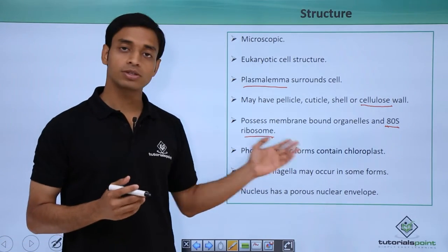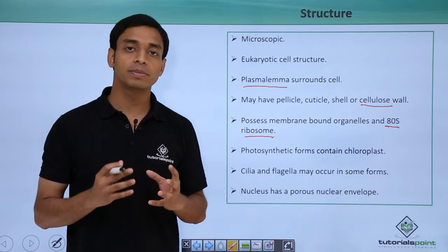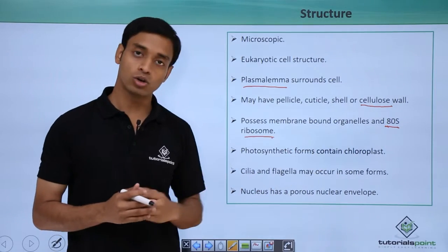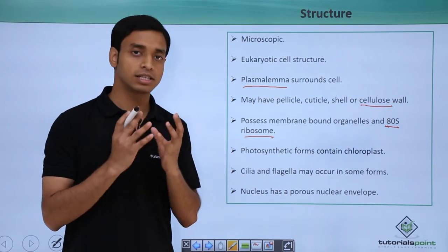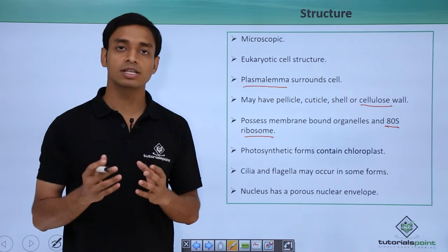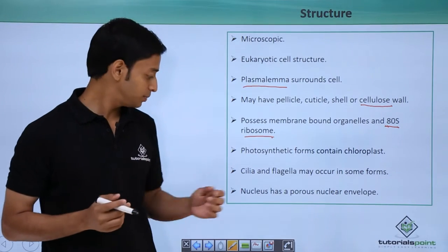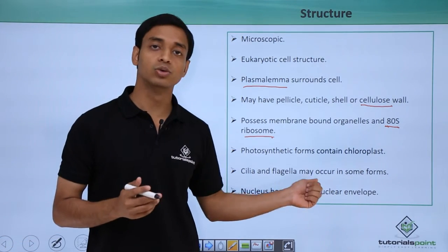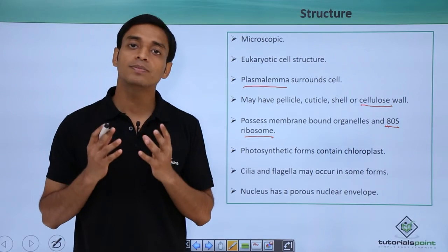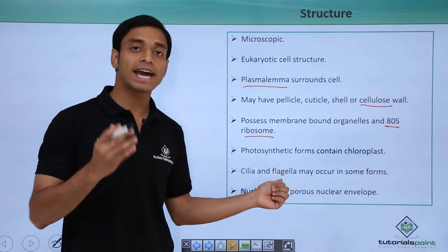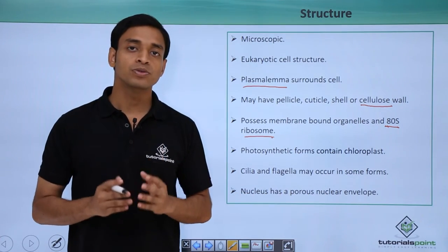They have got photosynthetic forms which may contain chloroplasts. Some forms may be photosynthetic, meaning they can prepare their own food, and hence they have got chloroplasts. Now cilia and flagella may be present in some forms of Protists — this is not mandatory for all types. Some forms may have cilia and flagella which help in locomotion. The nucleus has a porous nuclear envelope, meaning it is a proper membrane-bound structure unlike that of the Prokaryotes, but a typical characteristic is that the nuclear membrane is porous in nature.